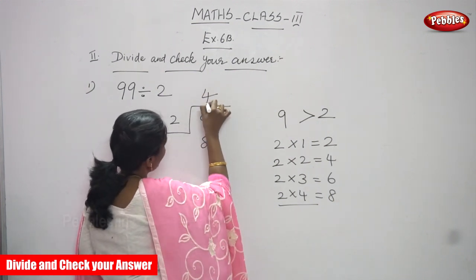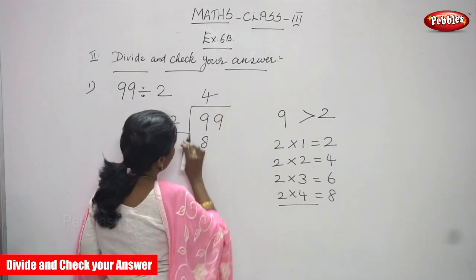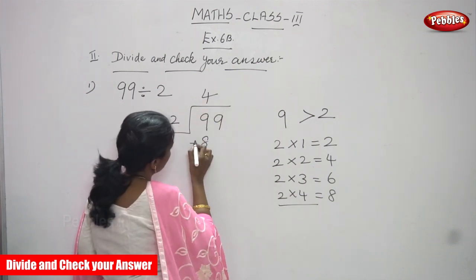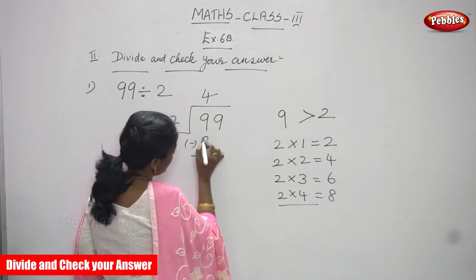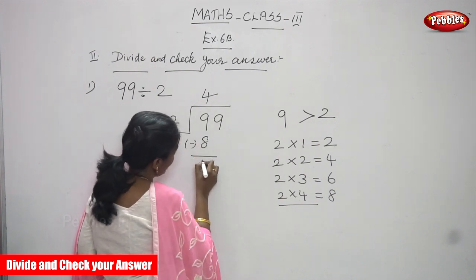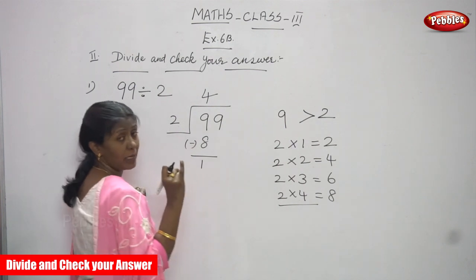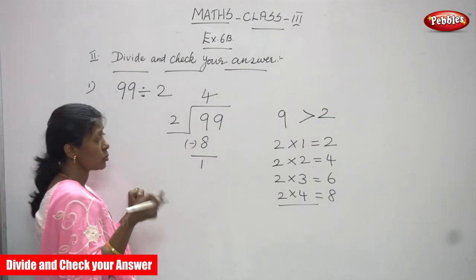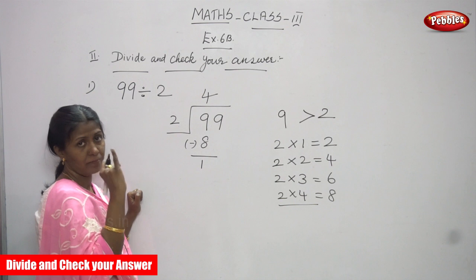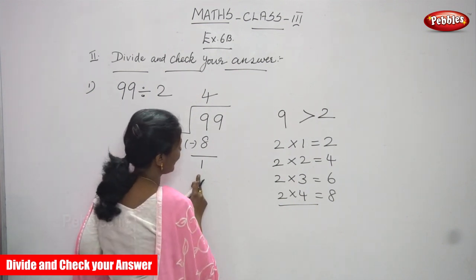So 2 fours are 8, meaning 4 is the quotient. Now you are going to subtract: 9 minus 8. You get 1. After 8, using backward counting: 8 plus 1 is 9. So you have to write 1 here.